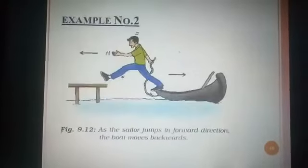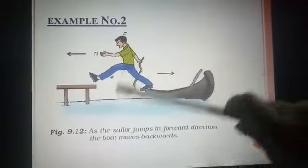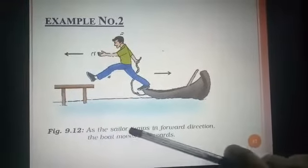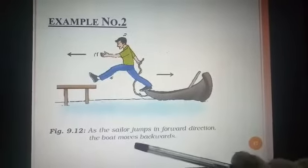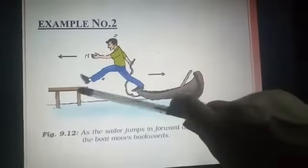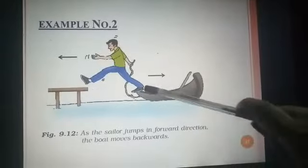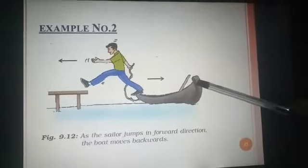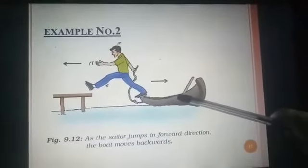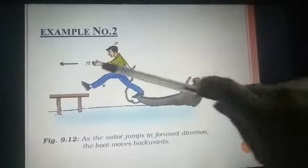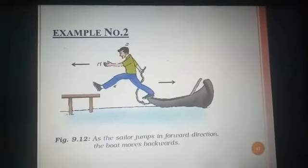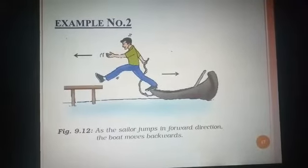Example number two: figure 9.12 from the textbook — as the sailor jumps in the forward direction, the boat moves backward. The sailor is moving forward and the boat is moving backward. Action is given by the man and the boat shows the reaction. Both forces are equal but the direction is opposite. This is the third law of motion.